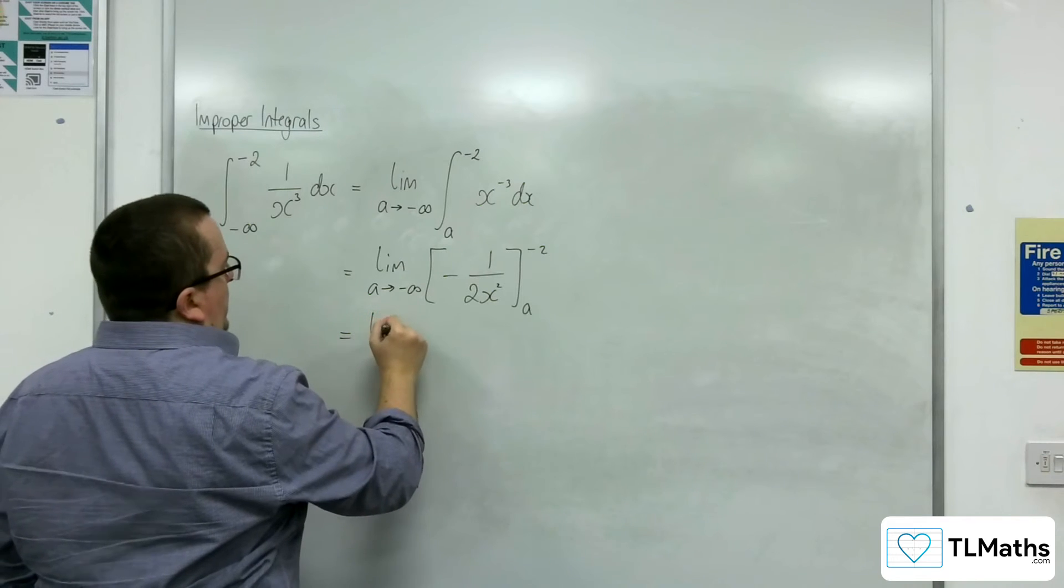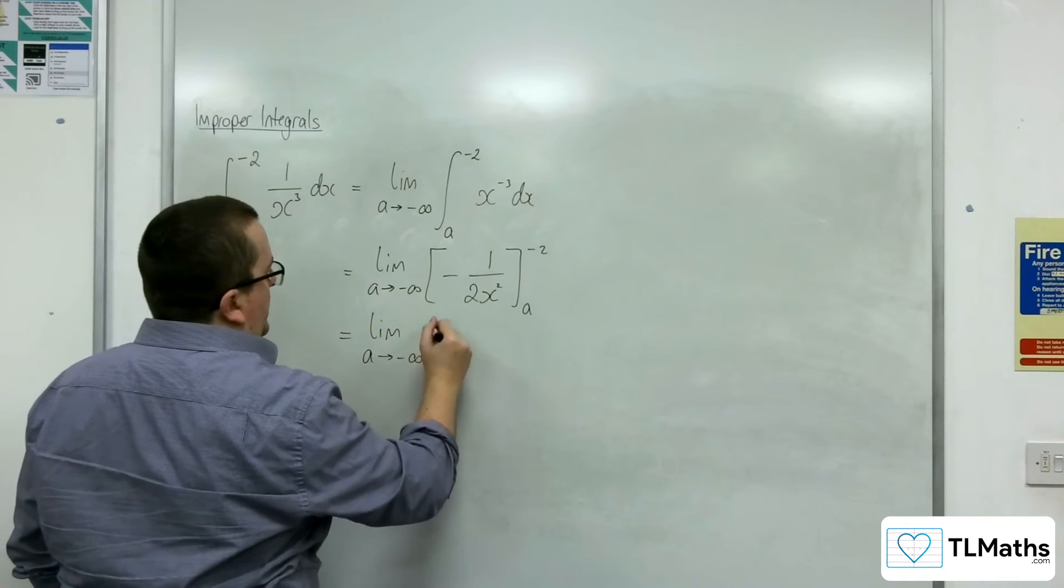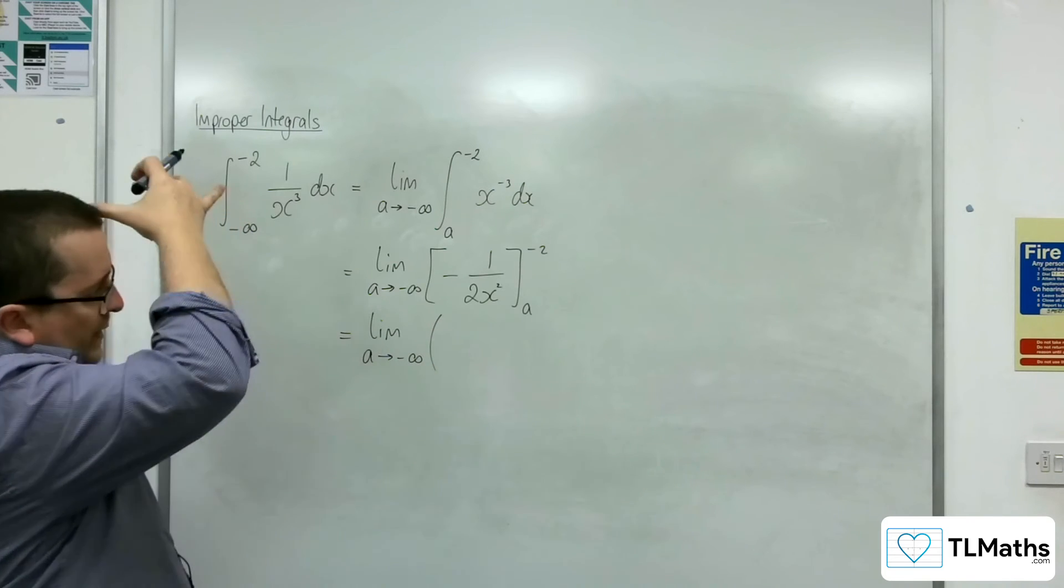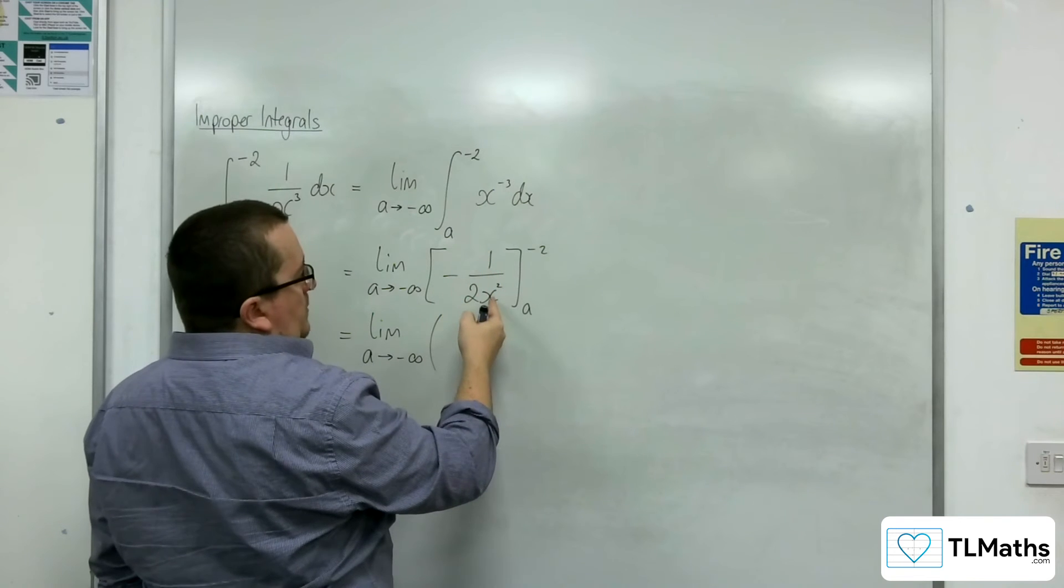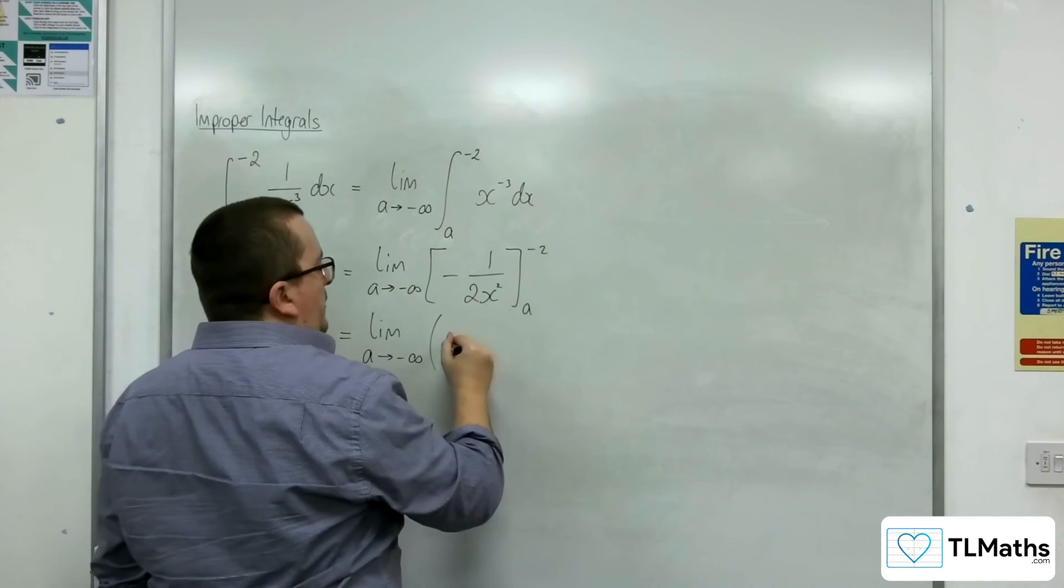We've got the limit as a tends to negative infinity of, now substitute in the minus 2, and I'm going to get minus 1 over 2 times 4, so minus 1 eighth.